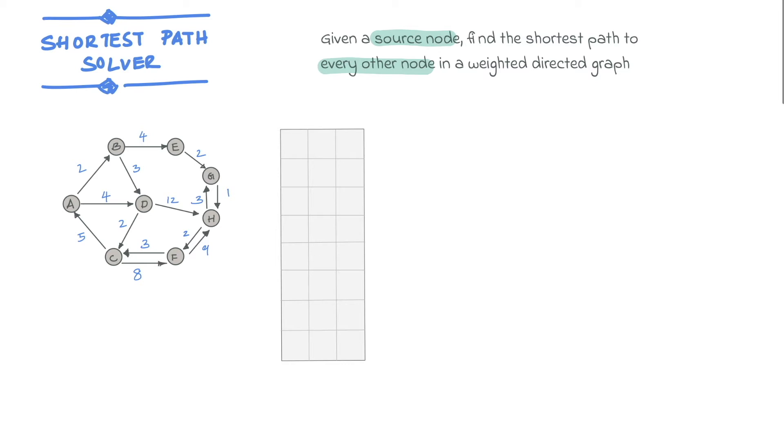Consider the graph network shown below. This is a weighted and directed graph with the nodes A, B, C, D, E, F, G, and H.